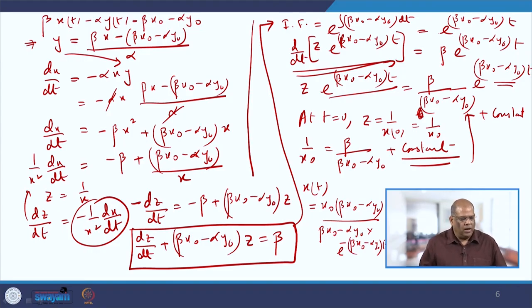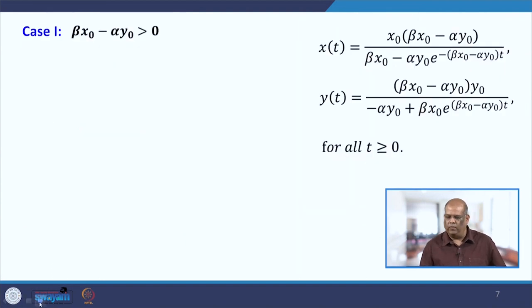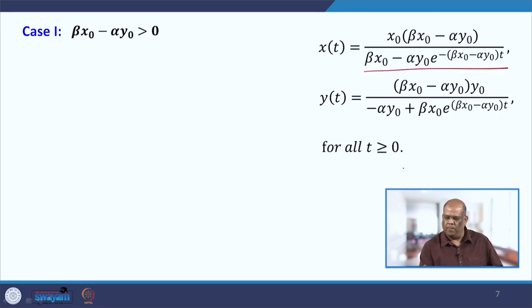In a similar manner, y(t) can also be calculated. The solutions are: x(t) = x₀·(β·x₀ − α·y₀) divided by the appropriate expression in t, and similarly y(t) = (β·x₀ − α·y₀)·y₀ divided by the corresponding expression.